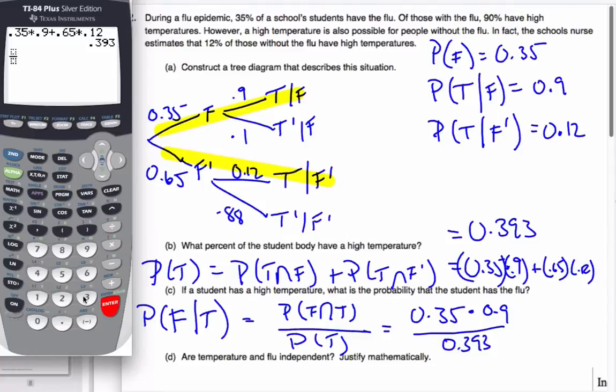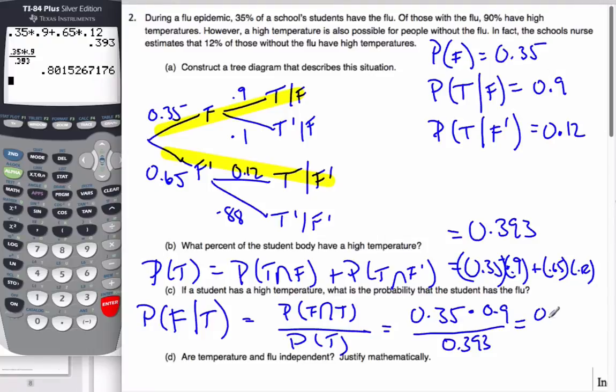let me try that again. I'm going to go 0.35 times 0.9 divided by 0.393, which is 0.8002. That's three significant figures. And so the probability of having a flu if I have a high temperature is 80%.